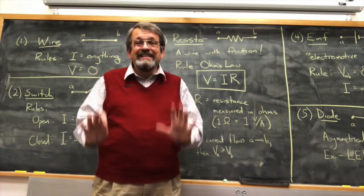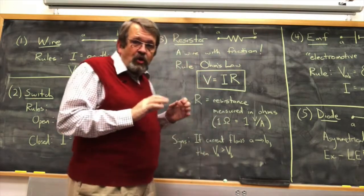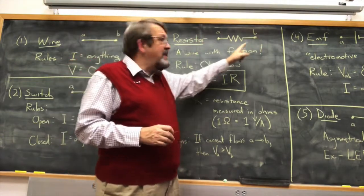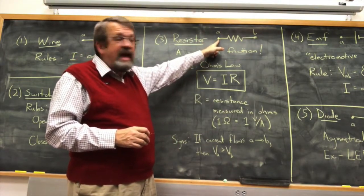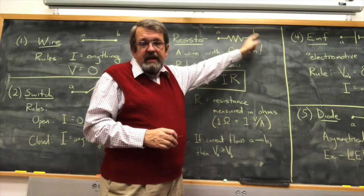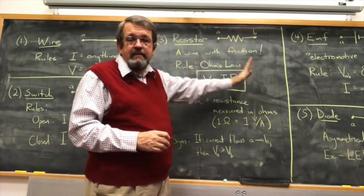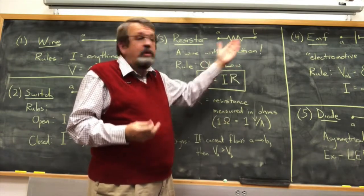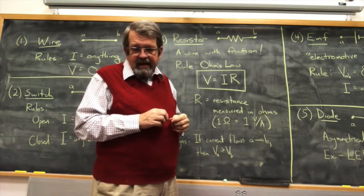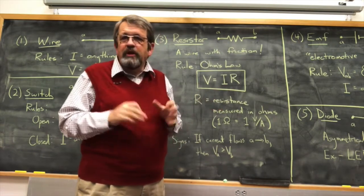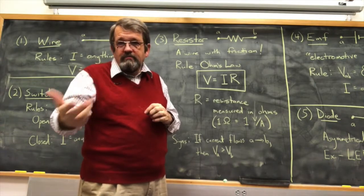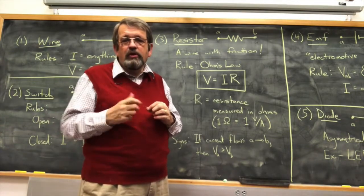An important thing about Ohm's Law is signs: current flows from higher potential to lower potential. If current flows from A to B, the potential at A is higher than at B. If I is negative, the current flows the other way and V would also be negative. We need to be careful about which direction we define as positive for current through the resistor.